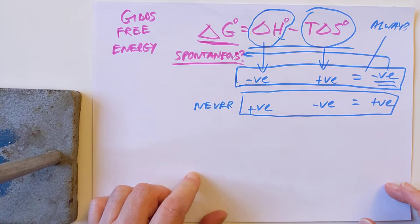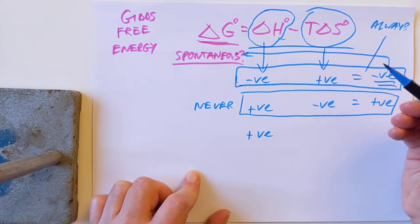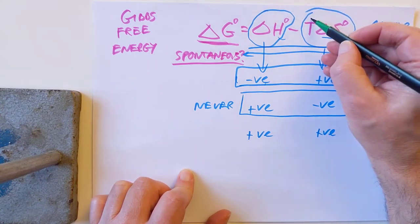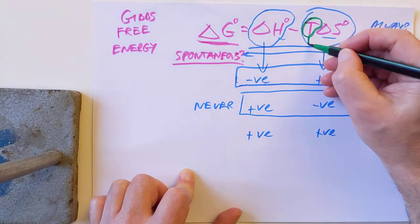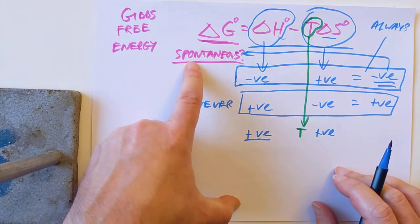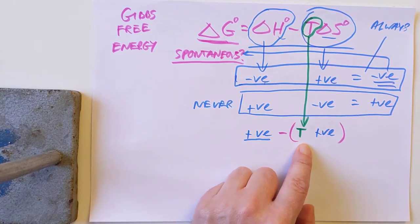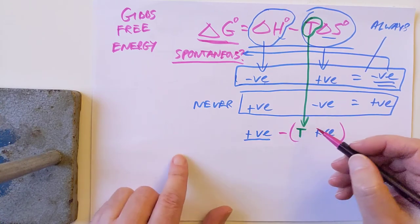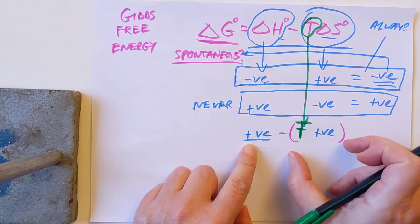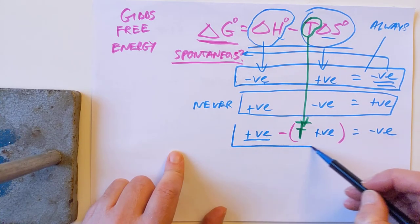What about the worst case scenario? What if we had an endothermic reaction and a drop in entropy? Now you've got a positive term to start with and you're taking away negative so you're making it even more positive. Gibbs energy here would be positive. This is never spontaneous. This reaction will never happen by itself at any temperature ever.